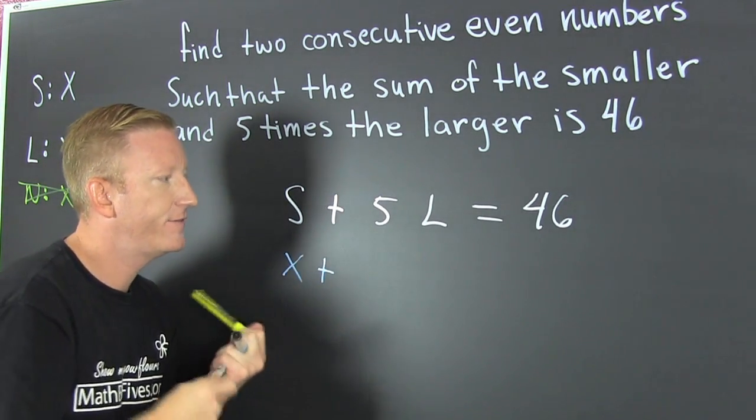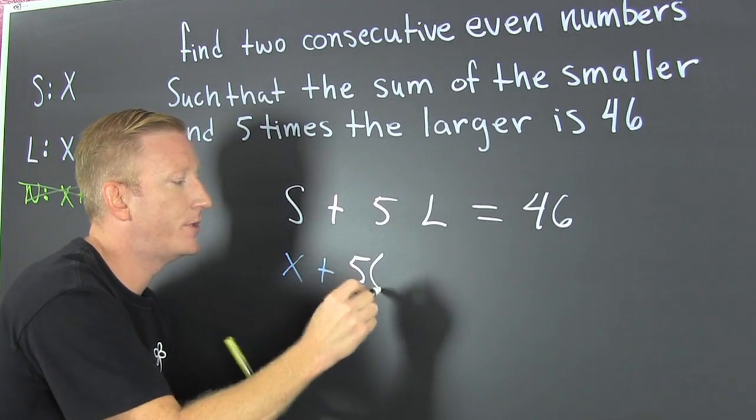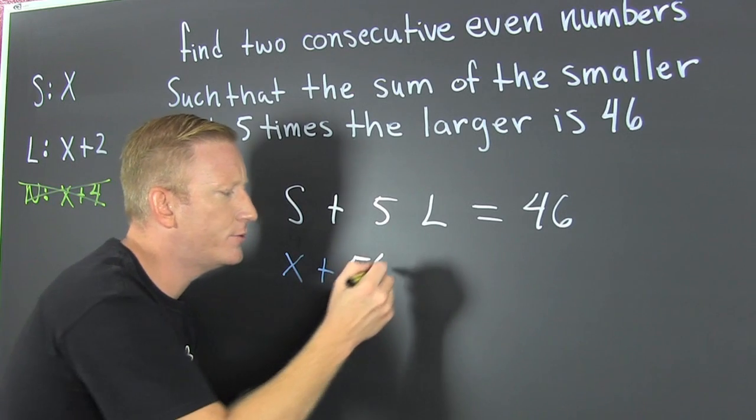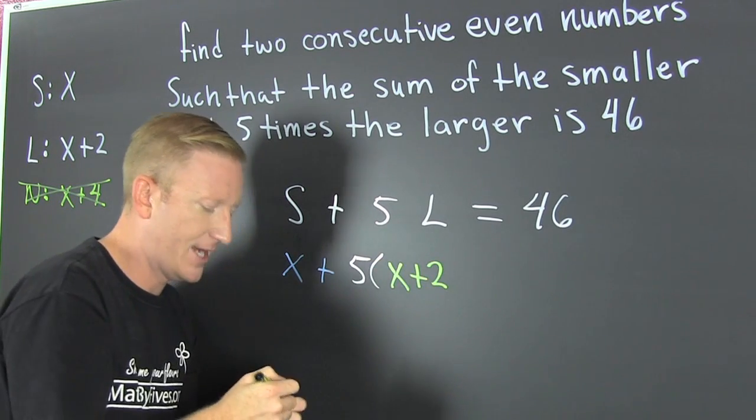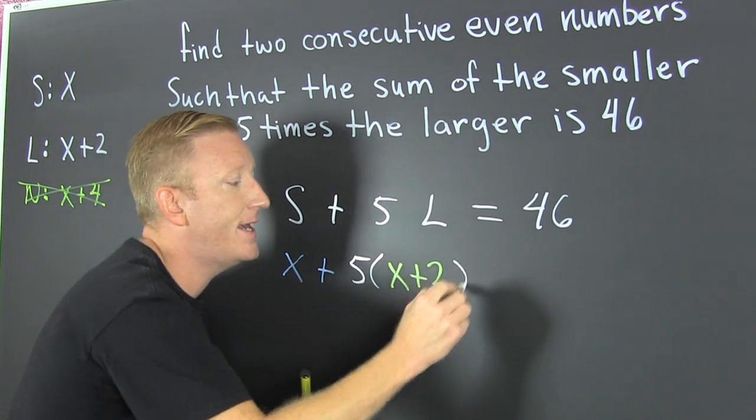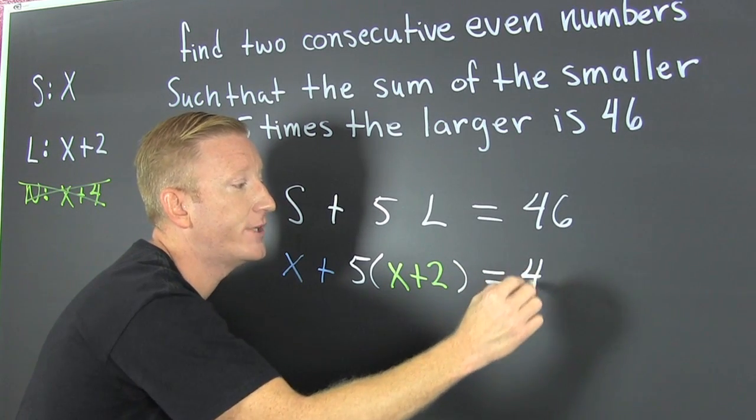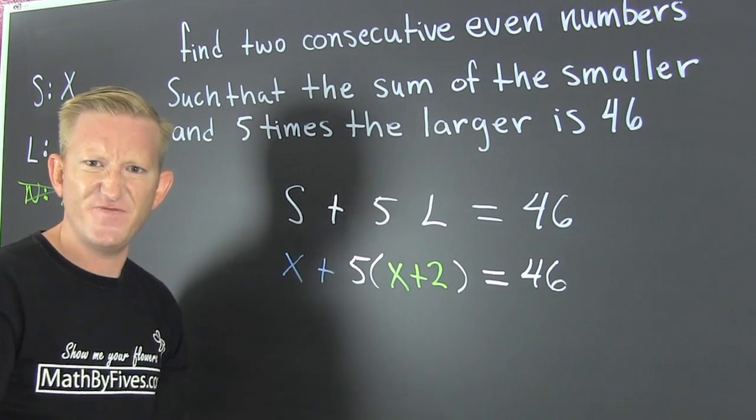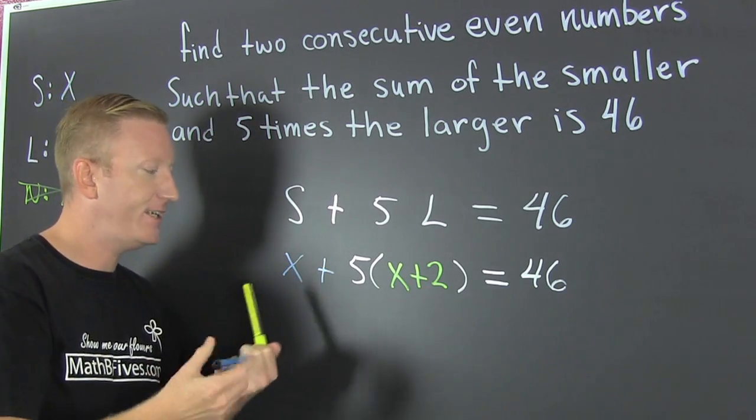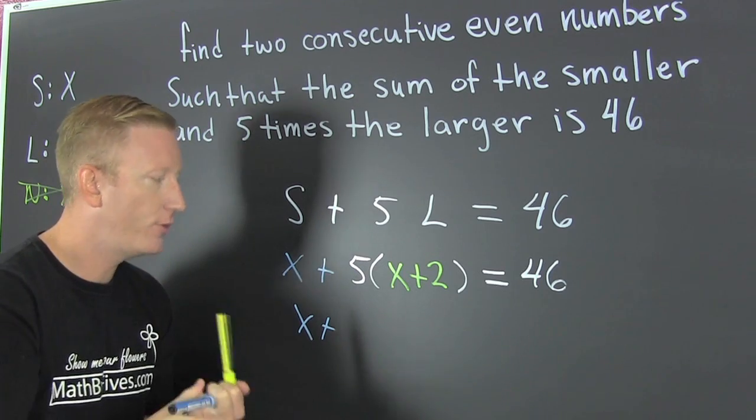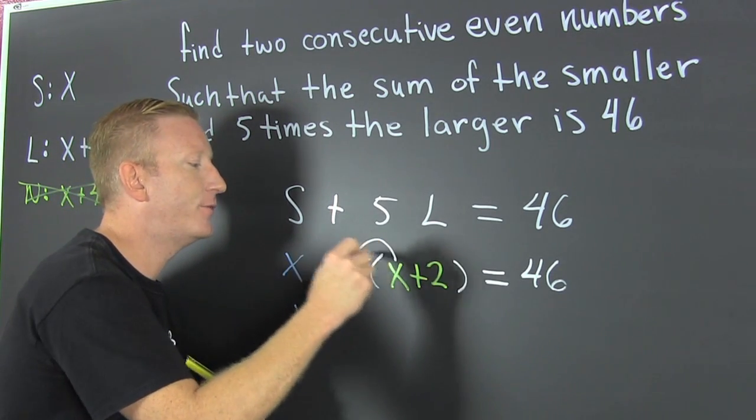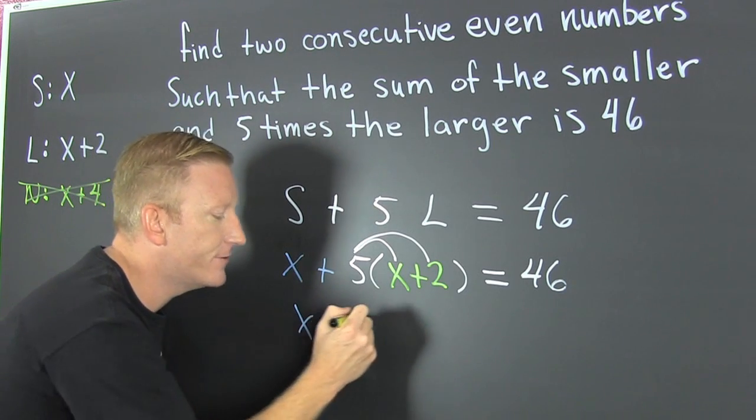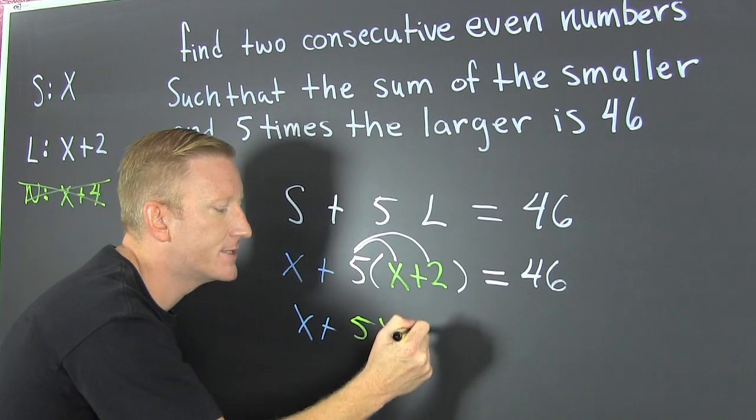And then I'm going to add to it 5 times the larger number. But we knew what the larger number was, too. Well, almost do. We have it in code, incognito. It's x plus 2. And I'm going to go. Finish him. Yeah, getting even. This is going to be x plus, wait for it. And I have 5x plus 10.